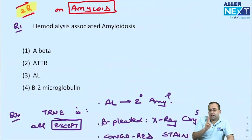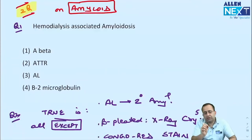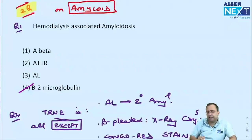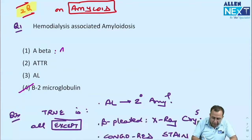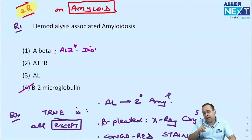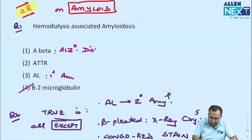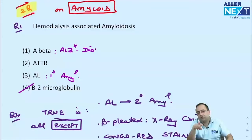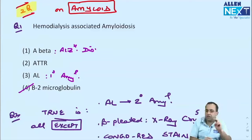Two amyloidosis questions appeared in this INI exam. First: hemodialysis-associated amyloidosis — the protein is beta-2 microglobulin. Other types: A-beta is Alzheimer's disease; AL (amyloid light chain) is primary amyloidosis/multiple myeloma; ATTR (transthyretin) is associated with senile cerebral amyloidosis. Second question: all are true except — AL is primary amyloidosis, not secondary. Beta-pleated sheets seen on X-ray crystallography. The answer was AL is primary, not secondary.